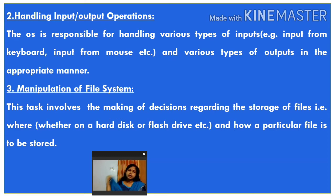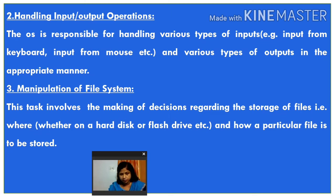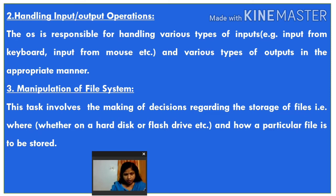Manipulation of the file system: this task involves making decisions regarding the storage of files. Sometimes we store our files on a hard disk, sometimes we transfer files to a secondary storage device like a flash drive — pen drives, CD drives, or Blu-ray disks. Whenever we transfer files to a hard disk or any other secondary storage device, how that file will go and store in a particular location or subfolder — that is the responsibility of the operating system.